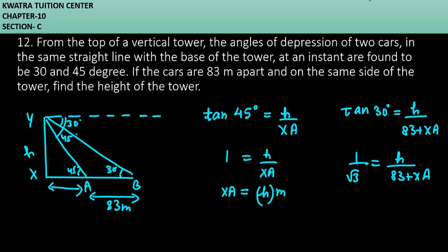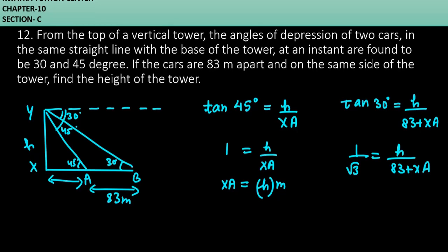Now, we can easily find the value of h and xa. So we will find the value of h using these two. So you can see the area of xa. So what can you write? h will be. So it will be 1 by root 3 equals h over 83 plus h it will be.